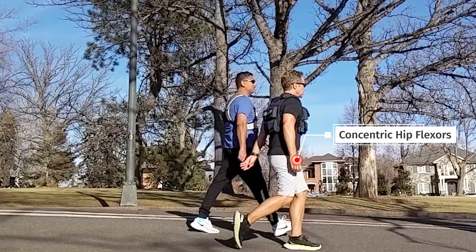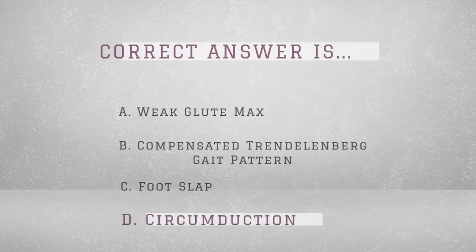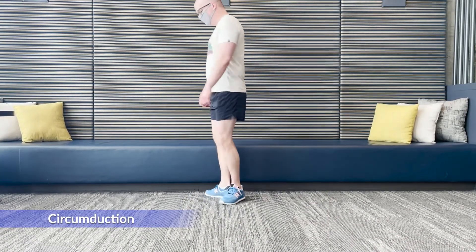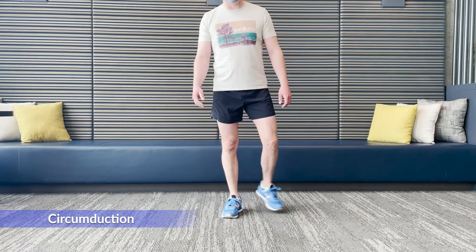Here comes that test question. During toe-off, if there is weakness of the iliopsoas and psoas major, which of the following is the most likely gait deviation? A) Weak glute max gait, B) Compensated Trendelenburg gait pattern, C) Foot slap, D) Circumduction. The answer is D, circumduction. If the hip flexors cannot propel the leg forward, the person will compensate with the TFL and glute medius to circumduct the lower extremity through the mid-swing phase, as you see here. You could also see other deviations such as hip hike and vaulting.